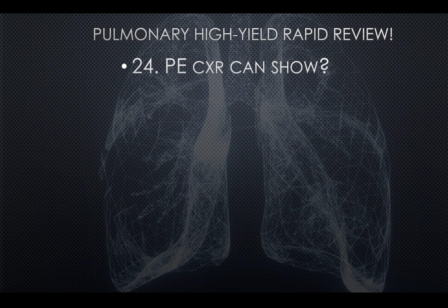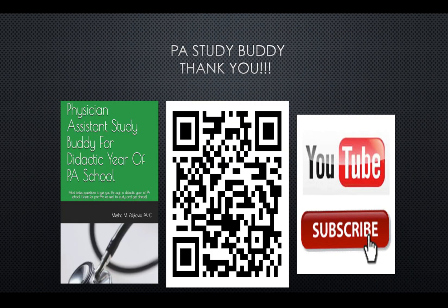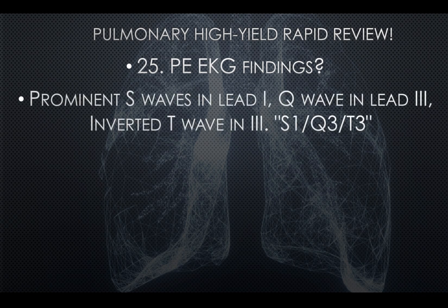Question twenty-three: PE on chest x-ray can show Westermark sign and Hampton's hump. Question twenty-four: PE EKG findings — look for a prominent S wave in lead one, Q wave in lead three, and inverted T wave in lead three: S1Q3T3. If you see S1Q3T3 in the stem, think PE.